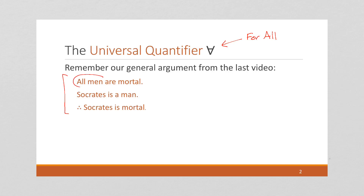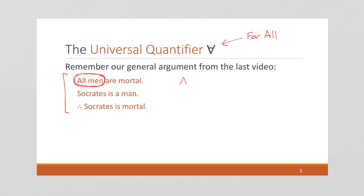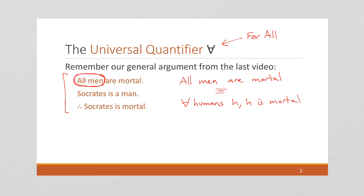But we weren't sure how to deal with this 'all men' part — that's going to use a quantifier. Another way of writing 'all men are mortal' is to say: for all humans H, H is mortal. We can simplify it further and say: for all H in the set of humans, H is mortal.